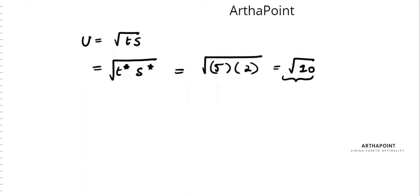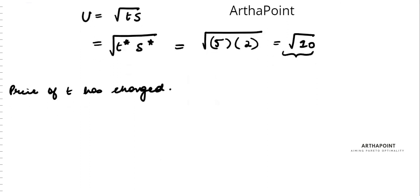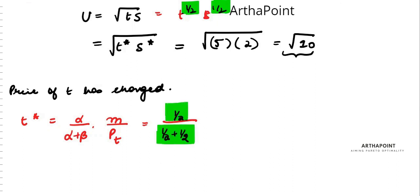Now we are saying that price of t has changed. So as I told you in the last video, you can go ahead and find t star as alpha upon alpha plus beta m by pt. So alpha is half, alpha plus beta is half plus half, because this utility function is t to the power half s to the power half.